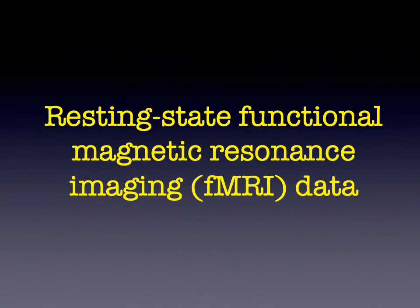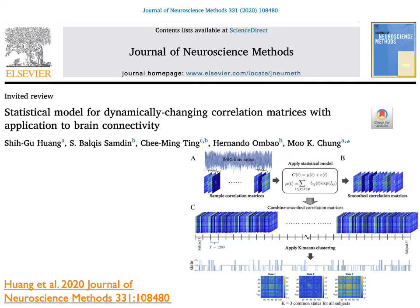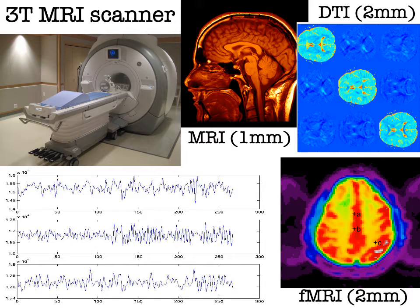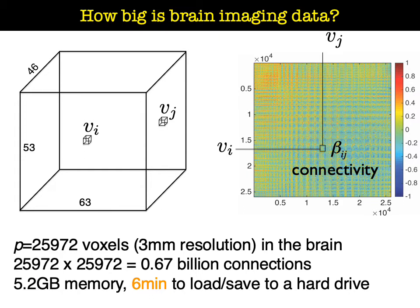We will explain the time series data we used — it's called the resting state functional MRI. The resting state fMRI is obtained in a 3 Tesla MRI scanner. A person lies down in the scanner and the brain is scanned while they are doing nothing — that's why it's called the resting state. For usual structural MRI the image resolution is one millimeter, DTI is about two millimeter, and fMRI can be either two or three millimeter. We used two millimeter resolution. At each voxel position a, b, c, we can have this kind of time series.